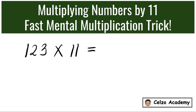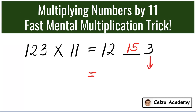Now let's have three-digit numbers: 123 times 11. We write 12, space, and a 3. Now we add 12 and 3, which is 15. For the final answer, we write down the 3, then the 5, and now we add 12 plus 1, which is 13.